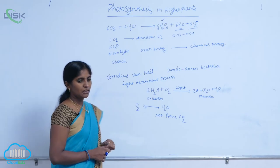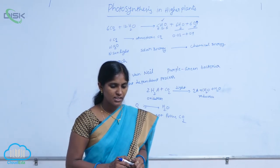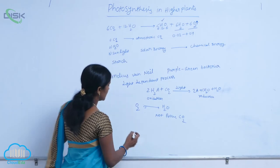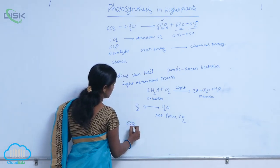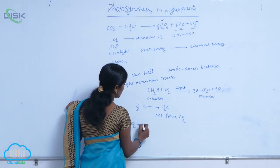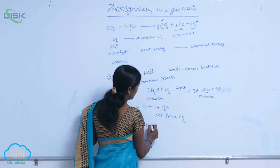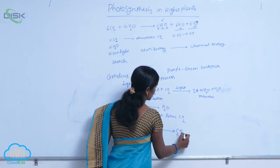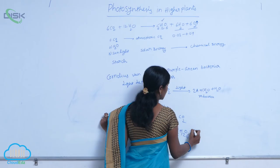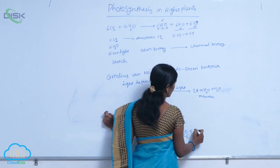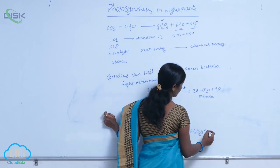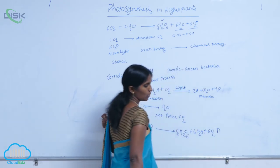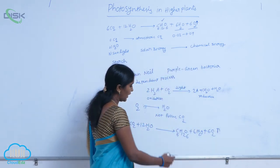Finally, the reaction is summarized as: 6CO₂ + 12H₂O gives rise to C₆H₁₂O₆ + 6H₂O + 6O₂, in the presence of light.